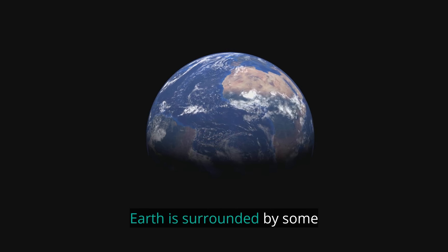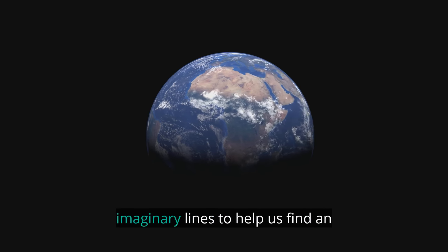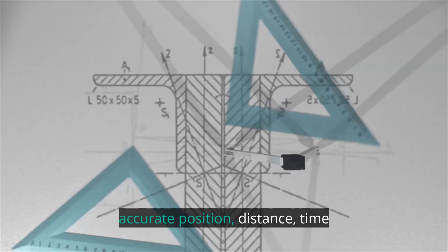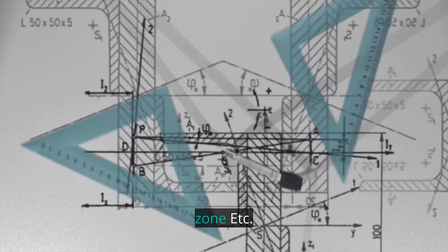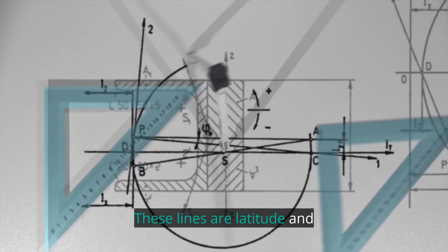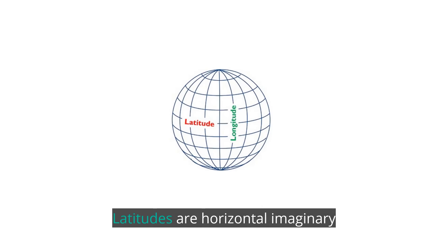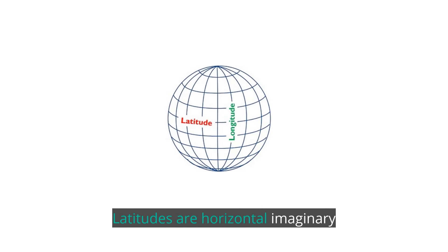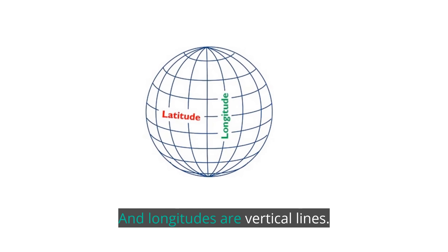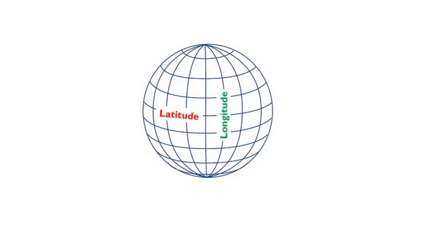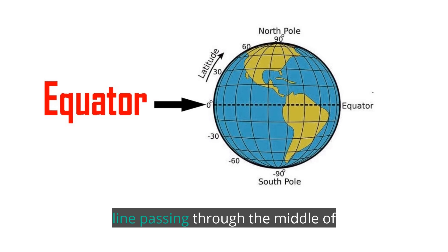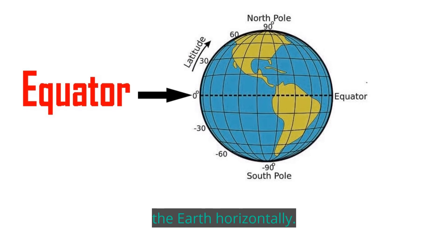Earth is surrounded by some imaginary lines to help us find an accurate position, distance, time zone, etc. These lines are latitude and longitude. Latitudes are horizontal imaginary lines and longitudes are vertical lines. The equator is the main latitude line passing through the middle of the earth horizontally.